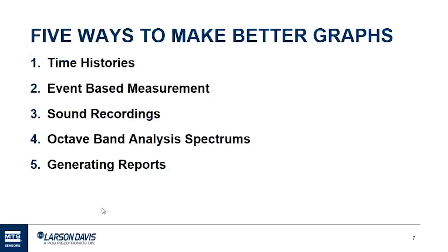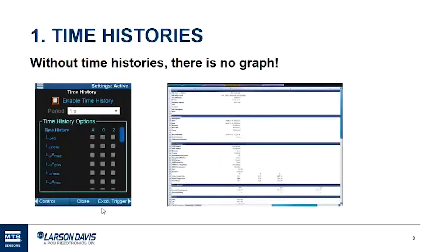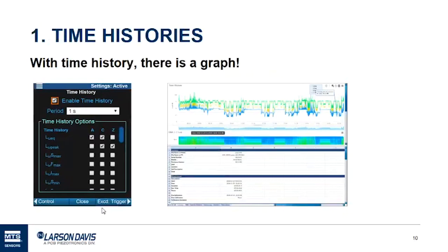Now we're going to go into the five ways to make better graphs, starting with time histories. The first thing you need to understand is that these are actually time history graphs — without time history there is no graph. Time history is the core option that opens up all the functions and features. With time history enabled, graphs are now available; any of the acoustic measurements selected will be available graphically. There are non-acoustic metrics in time history that won't appear in the G4 graph, like temperature and weather, but they are in the data and after exporting to Excel you can do your own reporting.